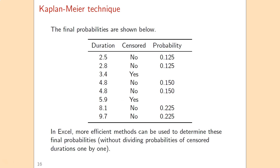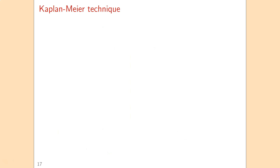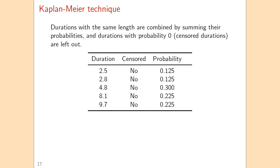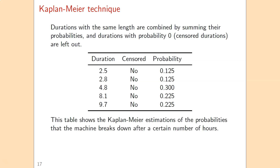This manual procedure is explained to show how the method works. When working with larger datasets in Excel, more efficient methods should be used rather than going through this one by one, to avoid errors and save time. After removing censored durations and combining equal-length event durations, we can use the resulting Kaplan-Meier probabilities to determine an estimate for the mean time between failures and for the reliability function.